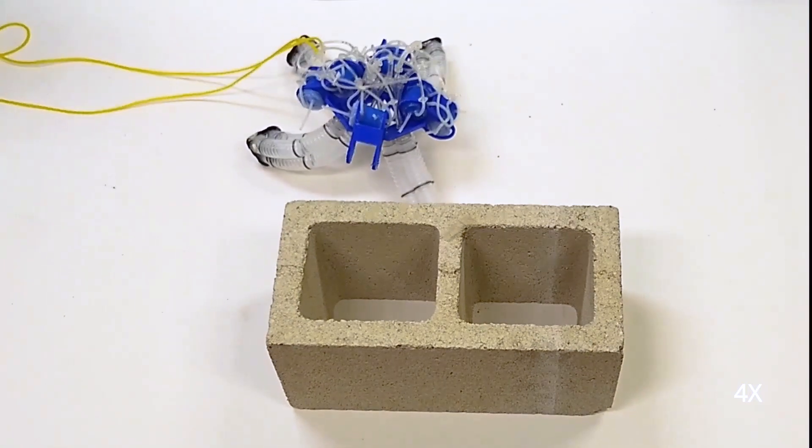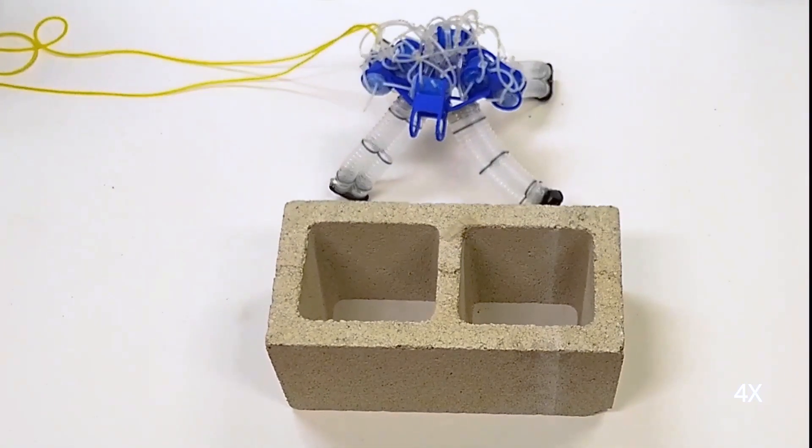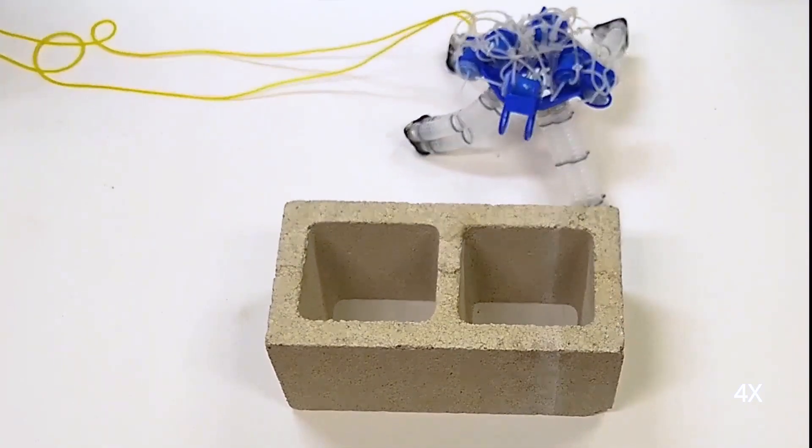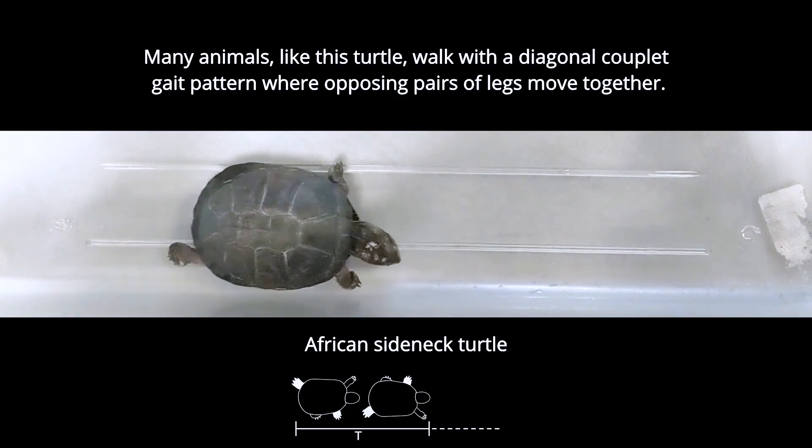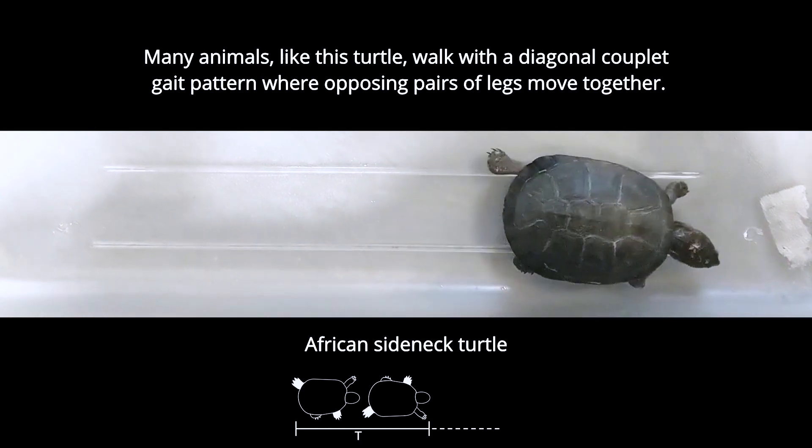The system is inspired by neural circuits found in nature that generate rhythmic patterns. The robot's walking pattern was inspired by the way side-neck turtles walk.